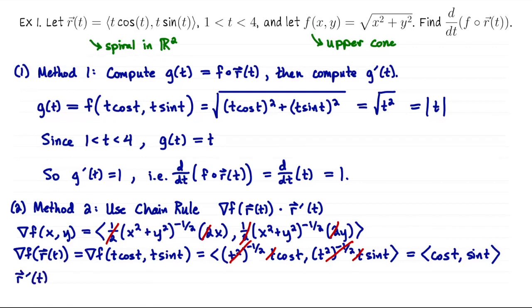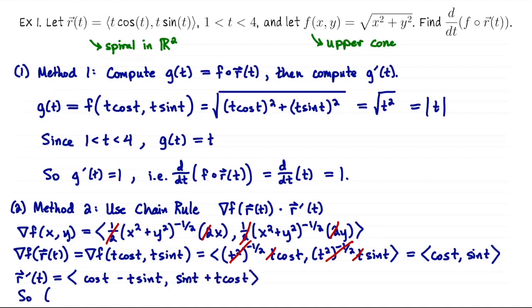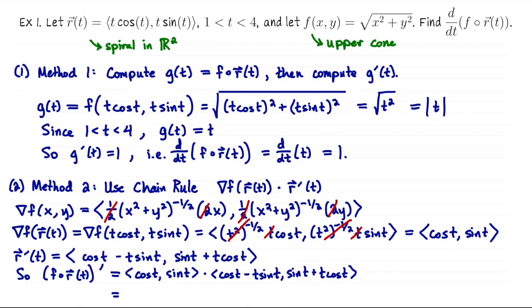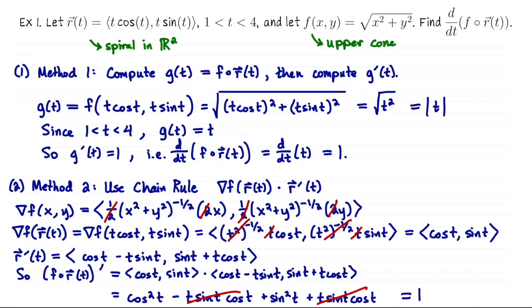Now we differentiate the parametric curve to get the velocity vector R prime of T. Using the product rule in each coordinate: the first coordinate is cos T - T sin T, and the second is sin T + T cos T. Taking the dot product of (cos T, sin T) with (cos T - T sin T, sin T + T cos T), we get cos^2 T - T sin T cos T + sin^2 T + T sin T cos T. Two terms cancel, leaving cos^2 T + sin^2 T = 1. The chain rule gives the same result as method 1.